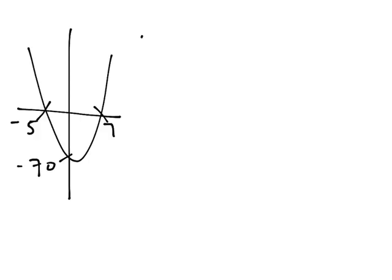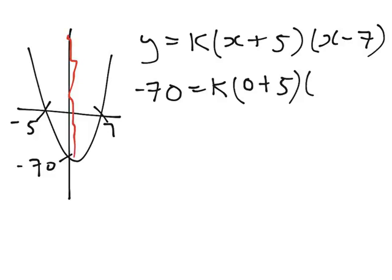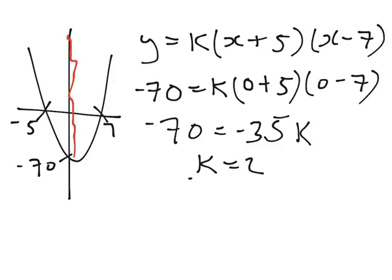So we can write that we don't know what k is, but we know we can write x plus 5, x minus 7. Once again, if you don't know why I'm writing that like that, then you're watching the wrong video. So I can substitute that in. I get negative 70 equals k. In this occasion, we're on the x-axis here, so x must equal 0. So 0 plus 5 times 0 minus 7. So negative 70 equals negative 35k, which works out nicely as k equals 2.